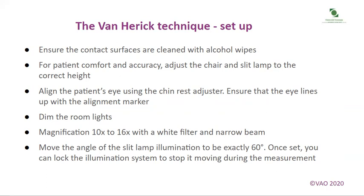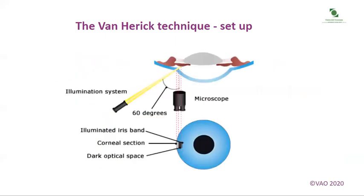Align the patient's eye using the chin rest adjuster, ensuring that the eye lines up with the alignment marker. Dim the room lights. Set magnification at 10 to 16 times with a white filter and narrow beam, and move the angle of the slit lamp illumination to be exactly 60 degrees. Once set, you can lock the illumination system to stop it moving during the measurement. Here is a schematic diagram of the Van Herrick technique when it is set up.